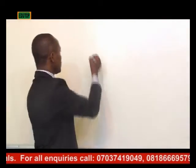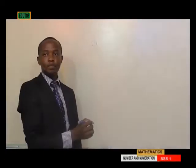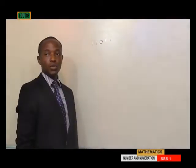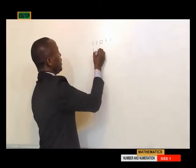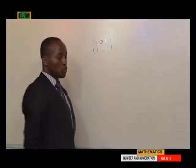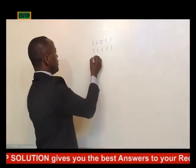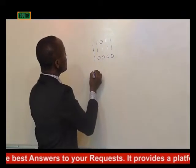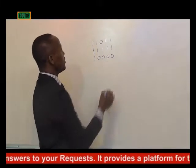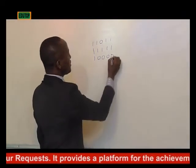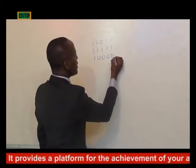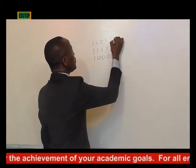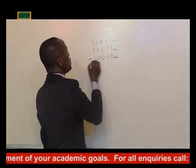So we will now write that out. First number: 1, 1, 0, 1, 1 in base 2. Then we have 1, 1, 1, 1, 1 in base 2. And then we have something that looks like 10,000 but not 10,000 — it is in base 2. Don't be surprised if you see something like this in base 2; the value is not ten thousand. So we have base 2, base 2, base 2. Now sum it up.